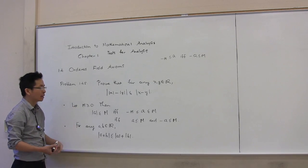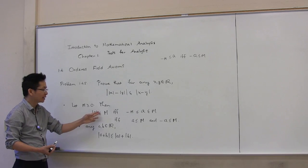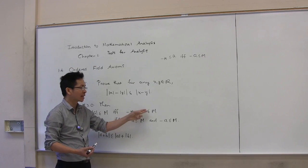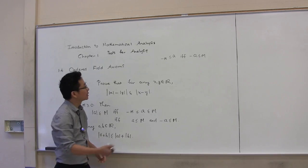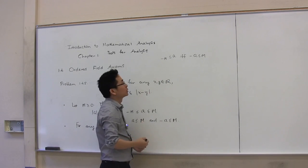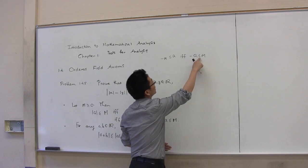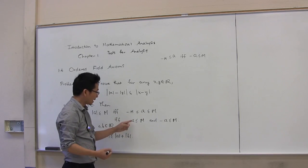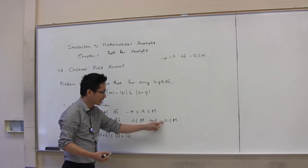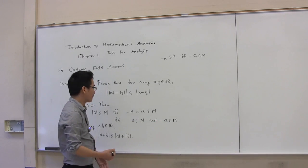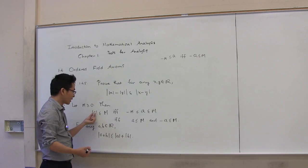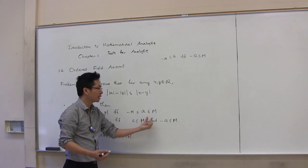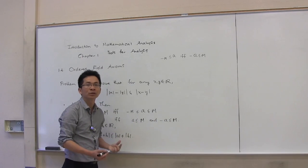Let m be a non-negative number. Then |a| ≤ m if and only if -m ≤ a ≤ m, that is, a ≥ -m and a ≤ m. Note that a ≥ -m if and only if -a ≤ m. Therefore, this inequality can be written as a ≤ m and -a ≤ m. So in order to prove that |a| ≤ m, we can show that a ≤ m and -a ≤ m.